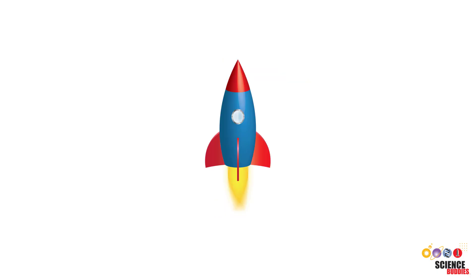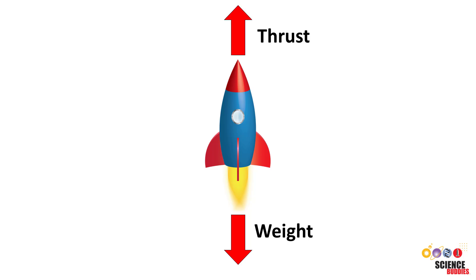Now let's talk about the forces on a rocket. As always, the rocket's weight points down towards the Earth. The thrust force generated by the rocket's engines points up. Since it's moving up relative to the air, the drag force points down.